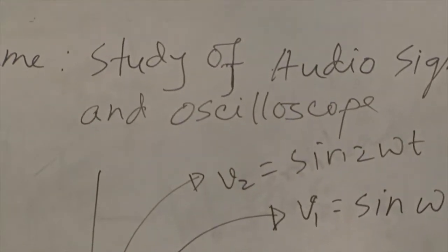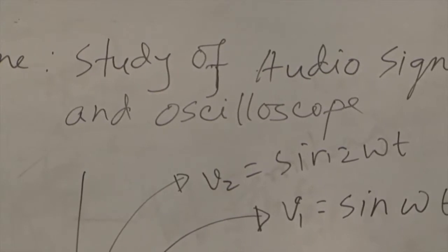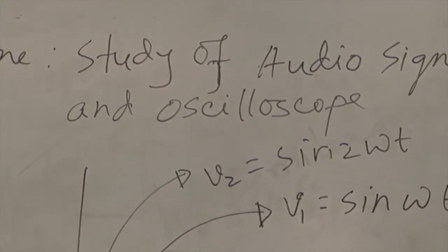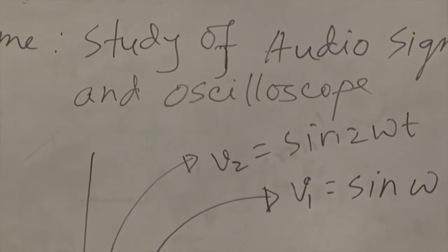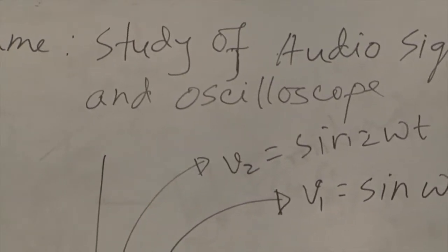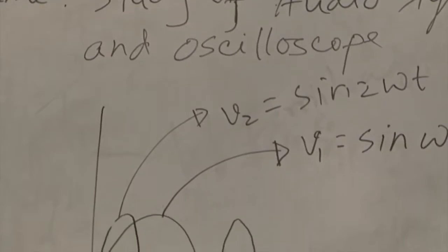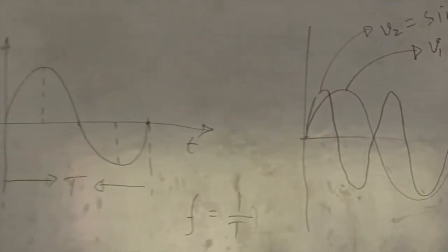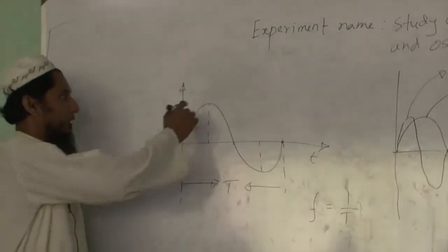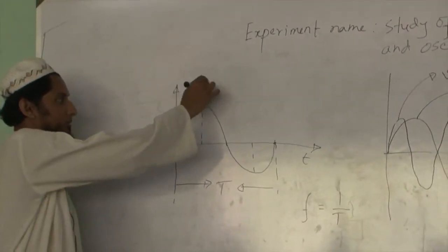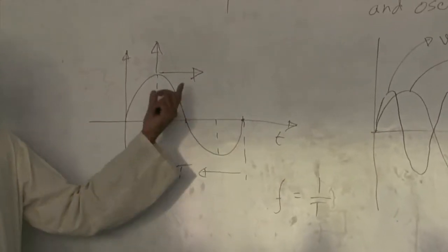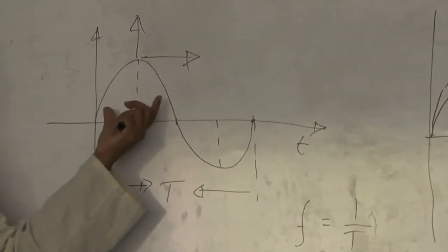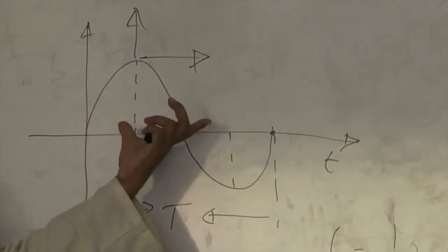Study of Audio Signal Generator and Oscilloscope — we call it a sine wave generator. The sine wave generator generates a sine wave. This sine wave's frequency can be changed, and the amplitude can also be changed. So the frequency change can be made.